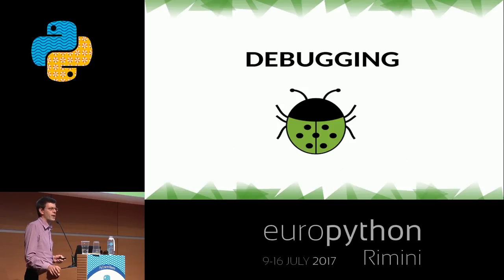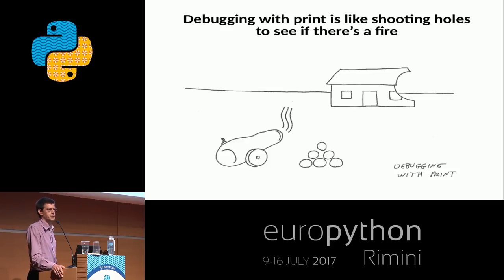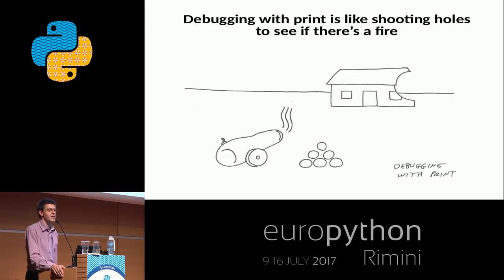Debugging. When you talk about debugging in Python, the first thing that comes to mind might be print. Now, print is something I consider a bit problematic — even though I do it a lot — because it's like shooting holes into a building to see whether there's a fire inside. Every time you add a print statement, there is a risk that when deleting it, you delete one line too much without noticing.